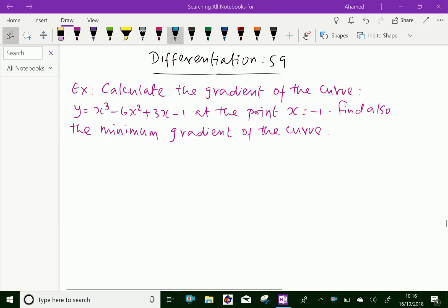For this example, calculate the gradient of the curve y = x³ - 6x² + 3x - 1 at the point x = -1. Find also the minimum gradient of the curve.